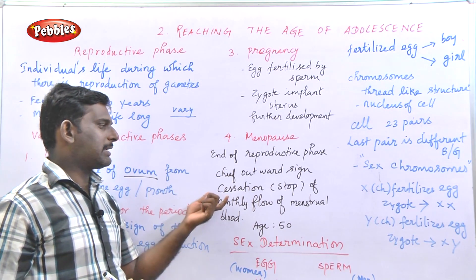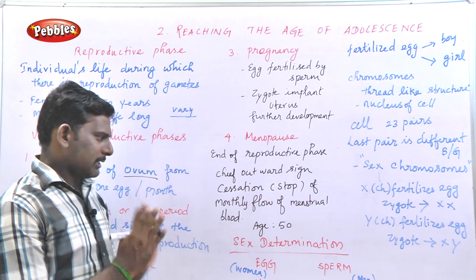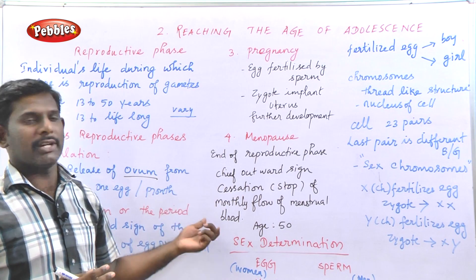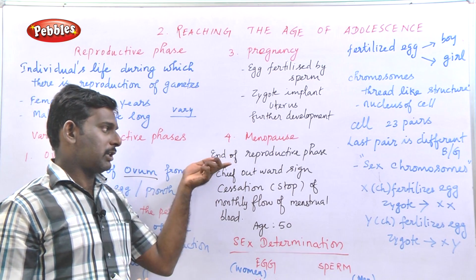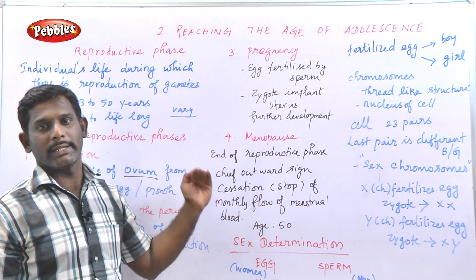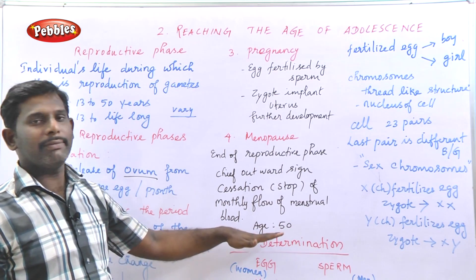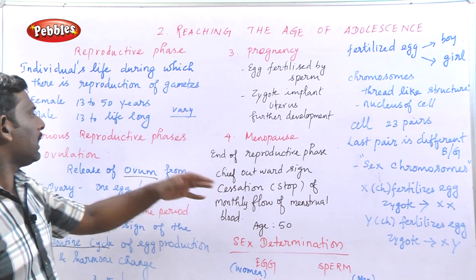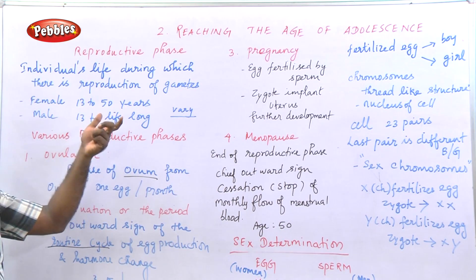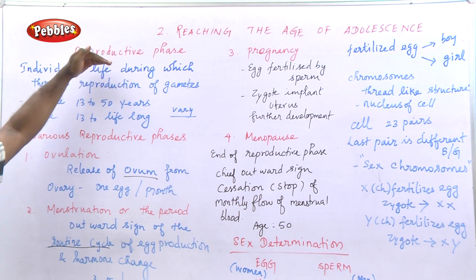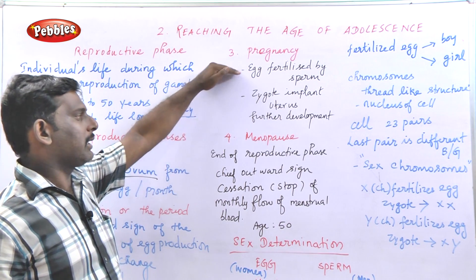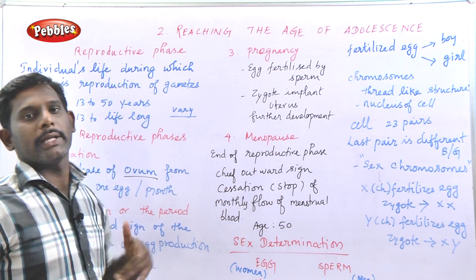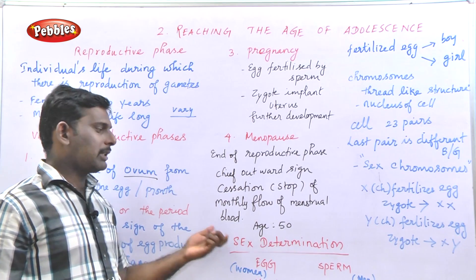So the various reproductive phases are: ovulation, menstruation, pregnancy, and menopause. The female reproductive phase spans from age 13 to 50. Next topic is sex determination — how a male or female child is formed.